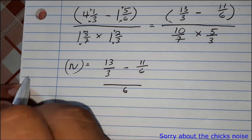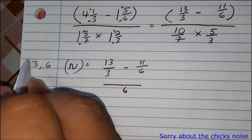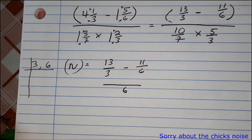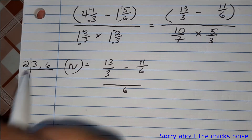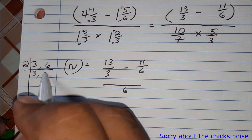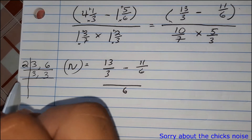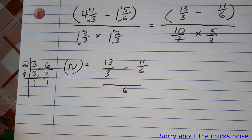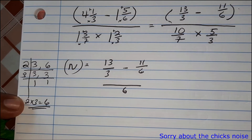When subtracting fractions we need to find the LCM. Write the two terms: three and six. Using the ladder method, we divide by the smallest prime. Two into three cannot go, so bring down the three; two into six is three. Then divide by three: one and one. So LCM is two times three, which gives us six.